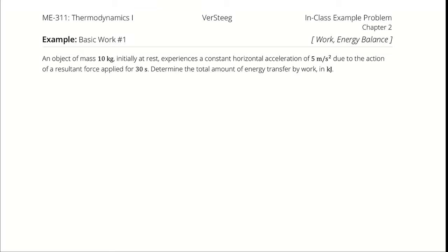An object of mass 10 kilograms, initially at rest, experiences a constant horizontal acceleration of 5 meters per second squared due to the action of a resultant force applied for 30 seconds. Determine the total amount of energy transfer by work in kilojoules.